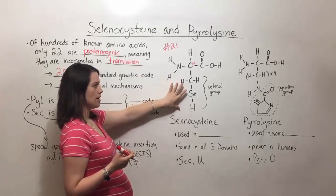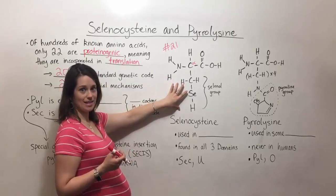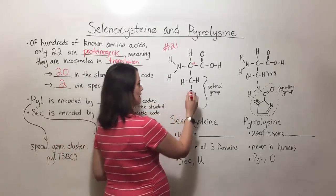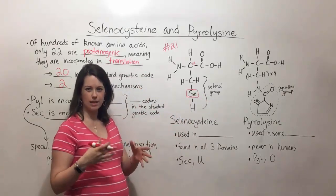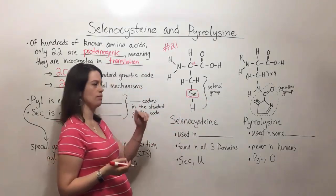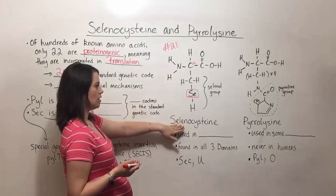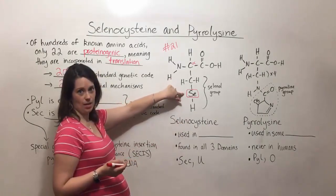This right here is very similar to the R group in cysteine, except that in cysteine, instead of a selenium, you have a sulfur. Cysteine is the one that makes the disulfide bridges you might be familiar with. But in selenocysteine, we've got a selenium here instead.